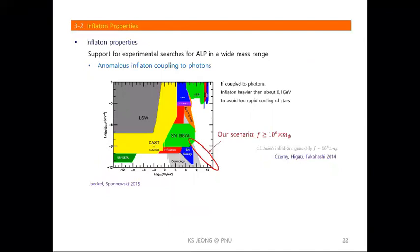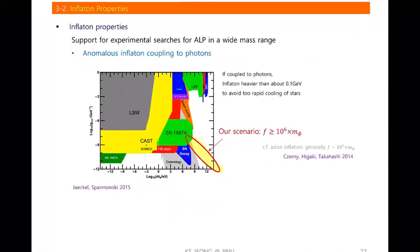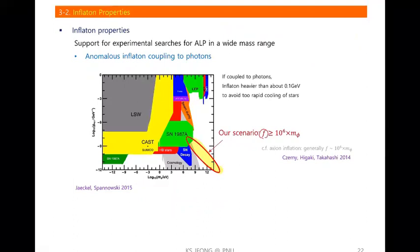Our scenario can be probed experimentally. For instance, if the inflaton has anomalous coupling to photons, as expected from its axion nature, then a certain region corresponds to the parameter space of our scenario. In our scenario the axion inflaton decay constant is larger than a certain bound. In axion-driven inflation there is usually a robust relation between the axion decay constant and its mass, but in our scenario the axion decay constant can be somewhat larger.